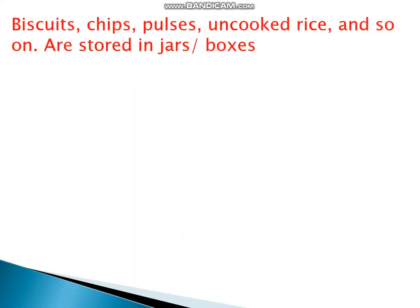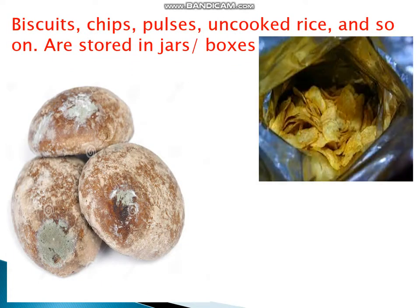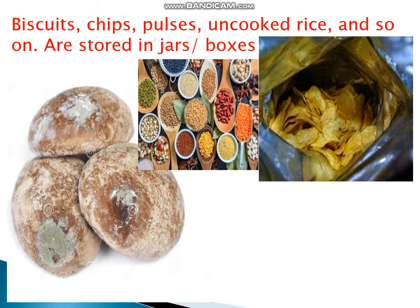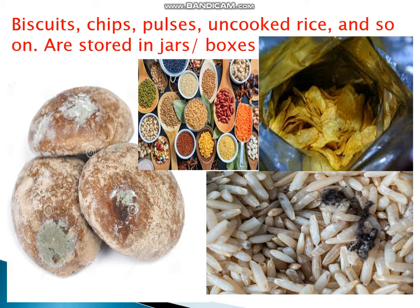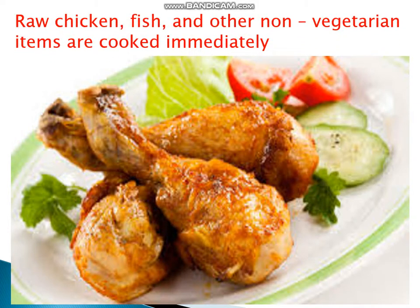Biscuits, chips, pulses, cooked rice and so on are stored in jars and boxes at room temperature. Turmeric powder or certain properly packed insect repellent tablets are placed in pulses and rice so that insects do not spoil them. Raw chicken, fish and other non-vegetarian items are cooked immediately or kept frozen till they are required.